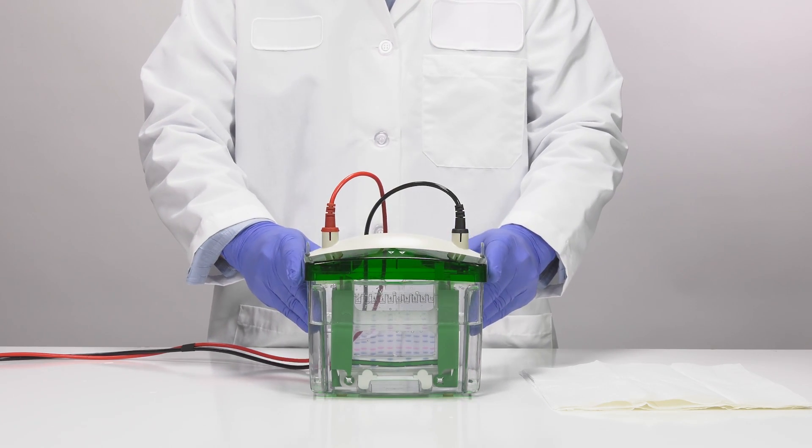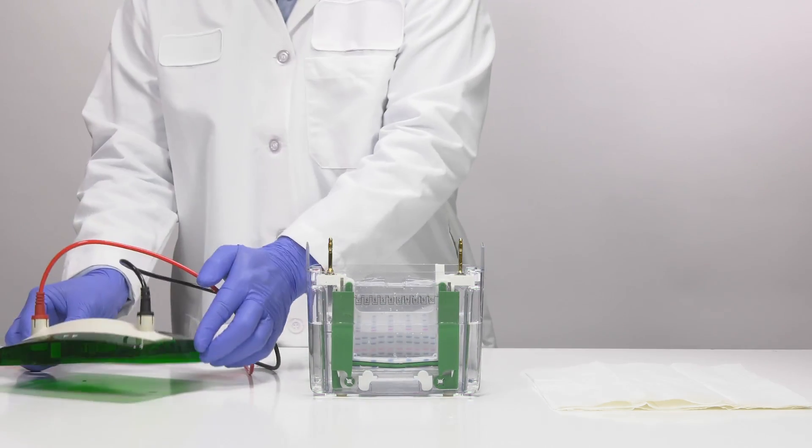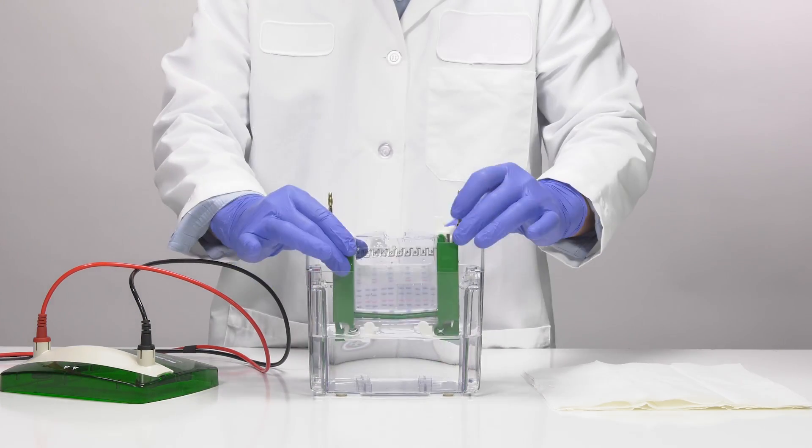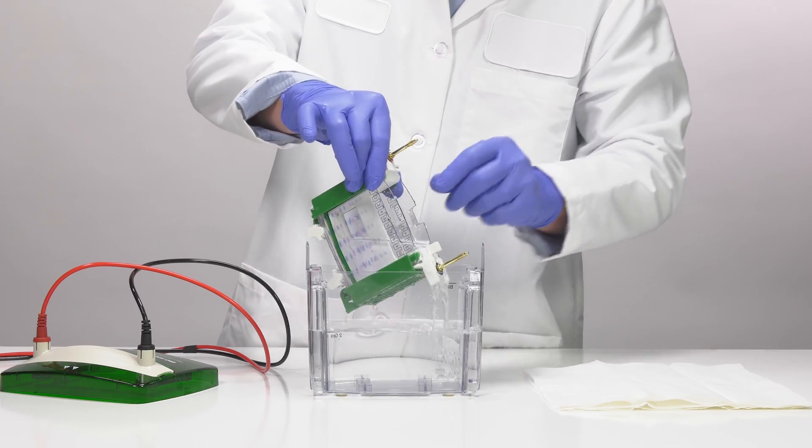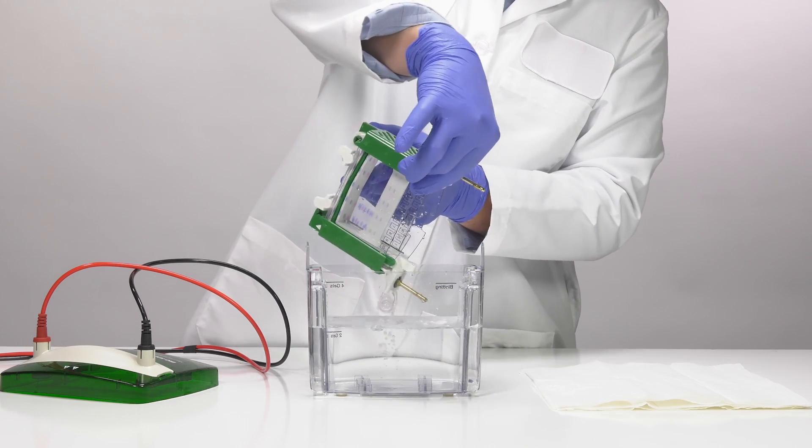Then turn off the power supply and remove the power leads from the electrophoresis tank. Pour the running buffer out of the core electrode assembly so you can remove the gel cassette from the tank.